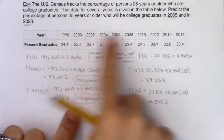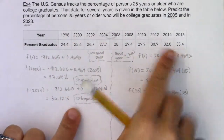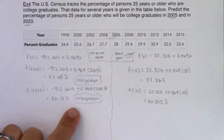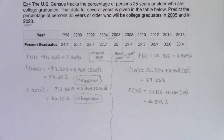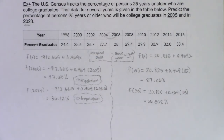Interpolating from past data is not as difficult. With that, we've finished Example 4 and we're going to move on to a brand new example — our last example for this section — and then we'll wrap up linear regression and linear modeling.